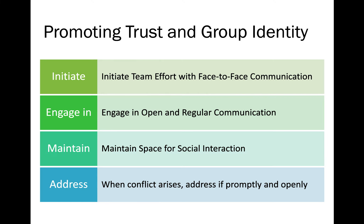So there are five tips regarding promoting trust and group identity — you can take a screenshot: initiate team effort with face-to-face communication as a group effort; engage in open and regular communication; always maintain and schedule space for social interaction, especially after COVID; and when conflict arises, address it promptly, openly, and effectively.